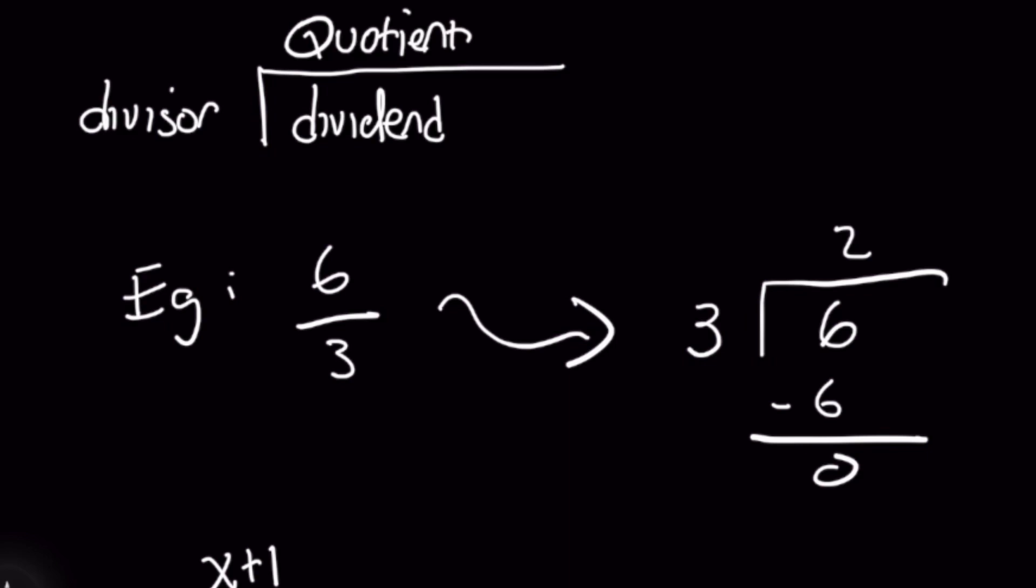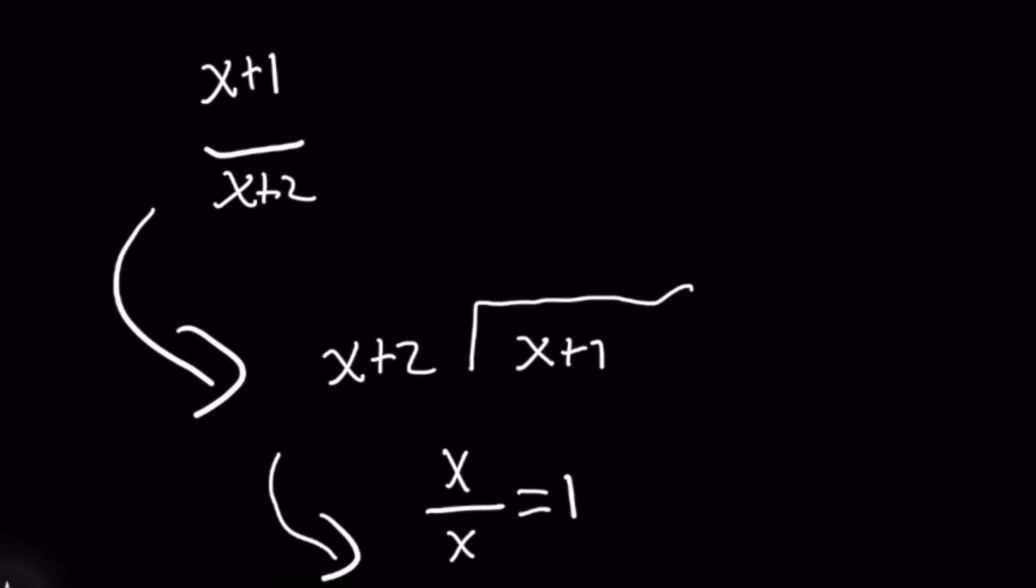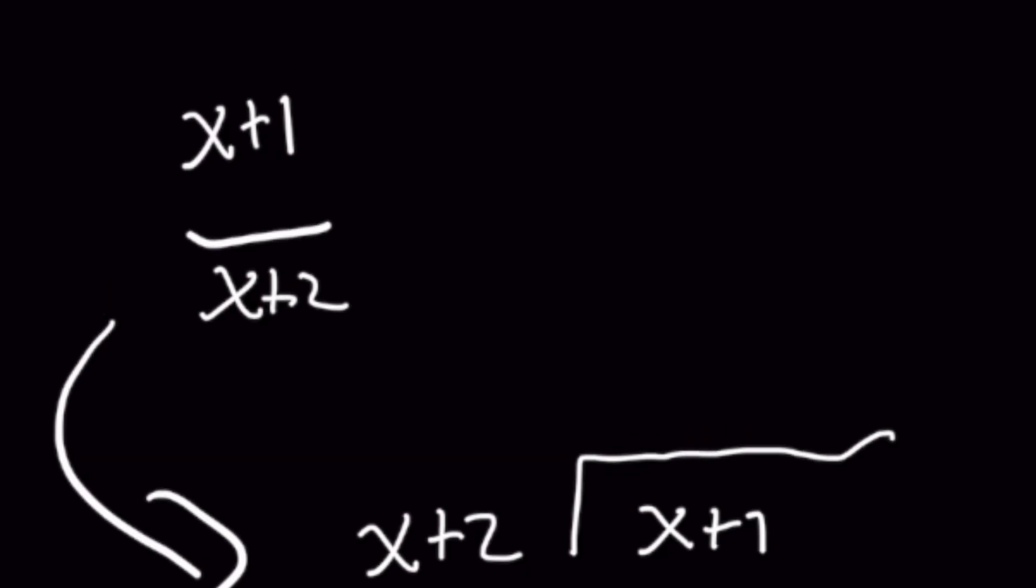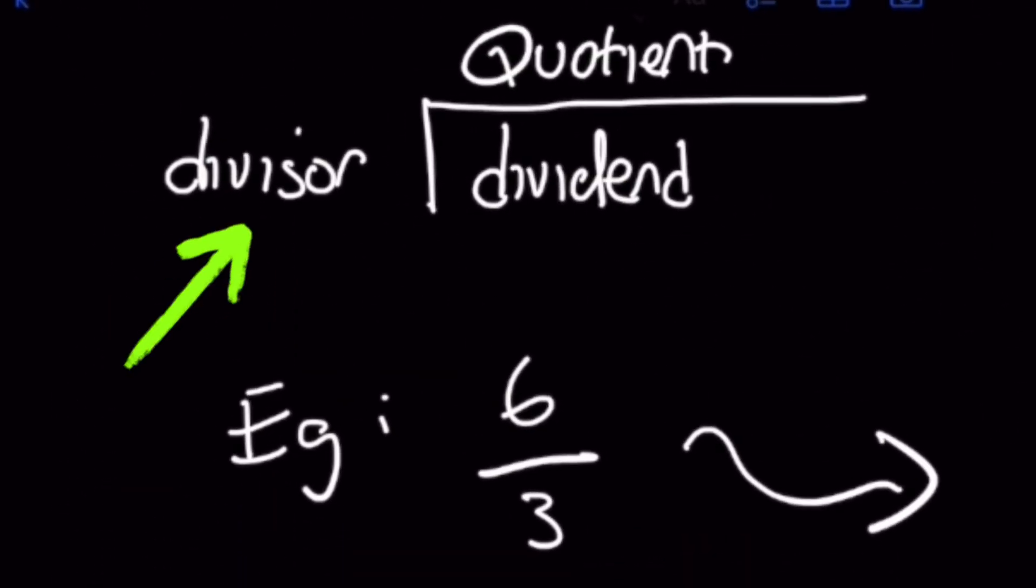So moving on, x plus 1 over x plus 2 is our original question and we want to use long division here because we want to break this up into fractions that are just easier to work with. So x plus 2 would go on the outside to the left here and if you remember that's your divisor.